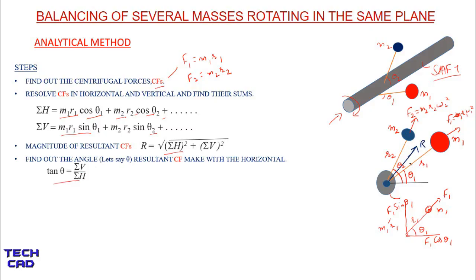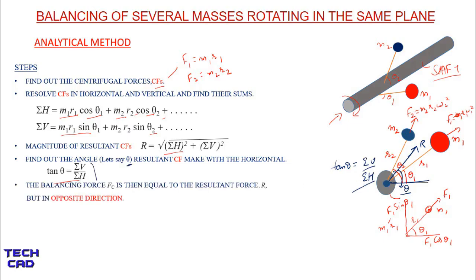When we make an angle theta, tangent theta is the ratio of vertical to horizontal components — this is the trigonometry rule. Whatever resultant is coming out, exactly opposite to that is our balancing force Fc. The resultant points in one direction, but the balancing force must be placed in the opposite direction. In other words, you have to put some balancing mass M3 to make this system balanced, which counteracts the unbalance caused by masses M1 and M2.